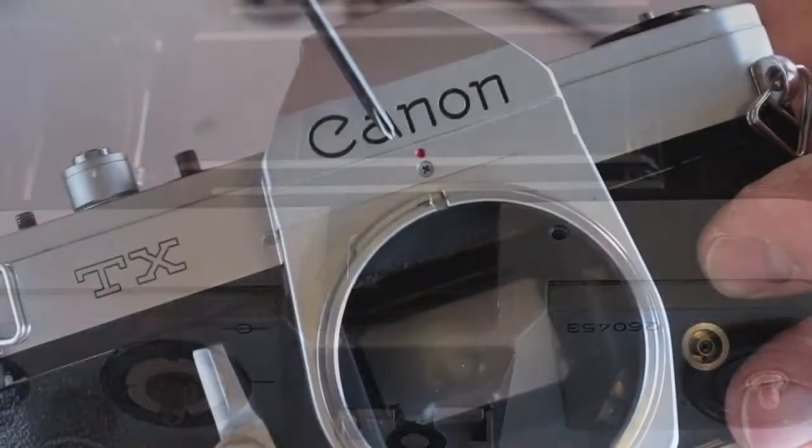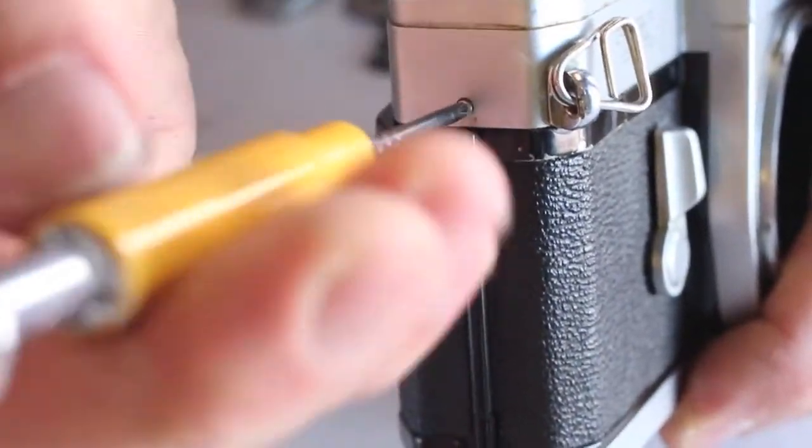After the five top cover screws have been removed, the top cover can be lifted free, taking care of the flash hot shoe wire.